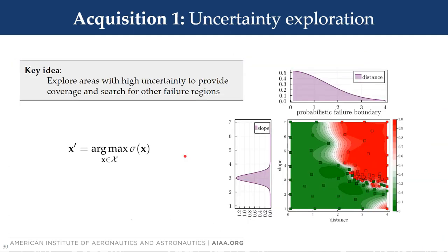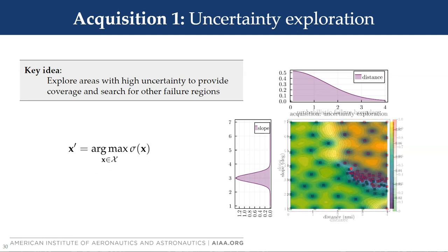The acquisition functions that are the crux of this work fulfill the three objectives we are interested in. The first acquisition function, called uncertainty exploration, is a simple idea: explore areas with high uncertainty to provide coverage and to search for other failure regions. Here we pick the point with maximal uncertainty over our design space. Looking at the surrogate and fading into what the acquisition function looks like, the lighter areas are those with high uncertainty, and we can see around the likely region we have very low uncertainty. There are areas we want to continue to explore, noting that we will cover the full design space in the limit of infinite samples.